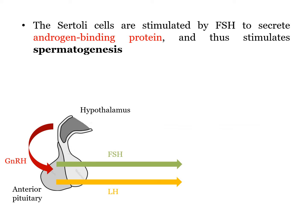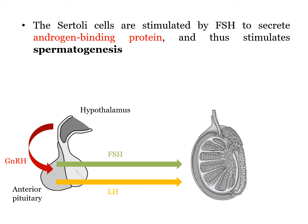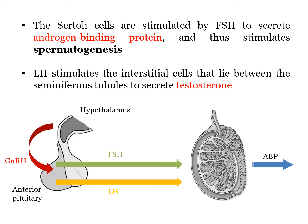There are two things that will happen with the secretion of FSH and LH. First, FSH will stimulate the Sertoli cells, which are the cells in the wall of the seminiferous tubules, to secrete androgen binding protein. This protein will stimulate spermatogenesis. On the other hand, LH will stimulate the interstitial cells, a type of cells that lie between the seminiferous tubules, to secrete testosterone.